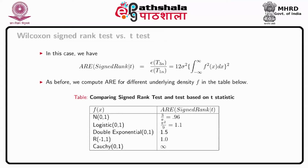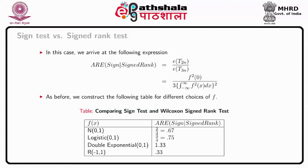Next, considering the Wilcoxon signed rank test and the test based on the t-statistic, the ARE of sign rank test relative to t is 12 sigma squared times the integral of f squared(x) dx, whole squared. Similarly, we can obtain tables for different density functions comparing sign test relative to t, and also the ARE of sign test relative to the sign rank test.